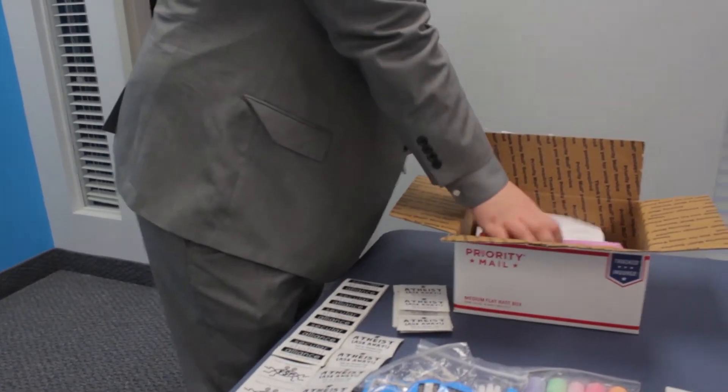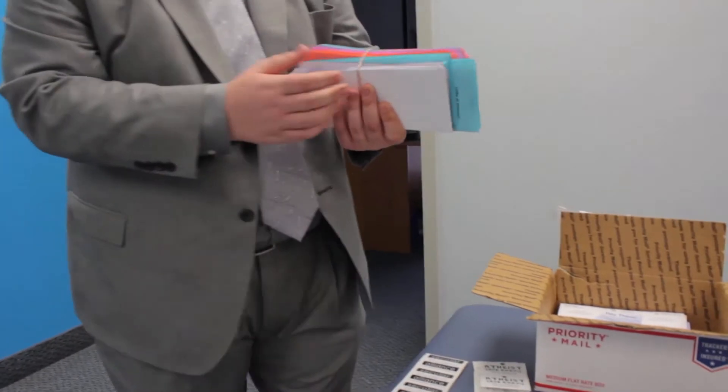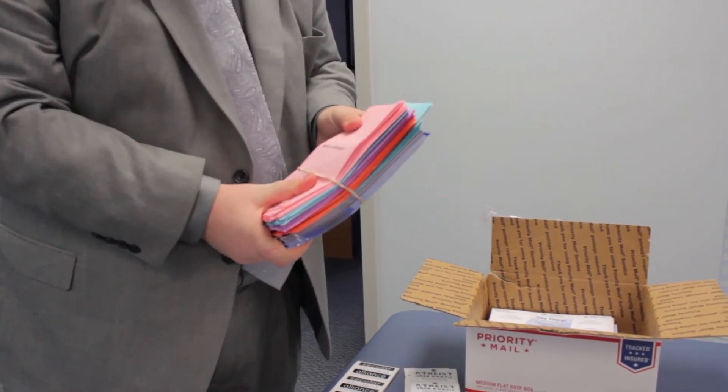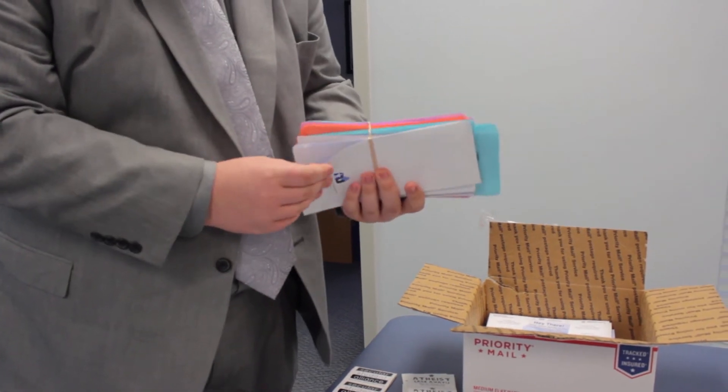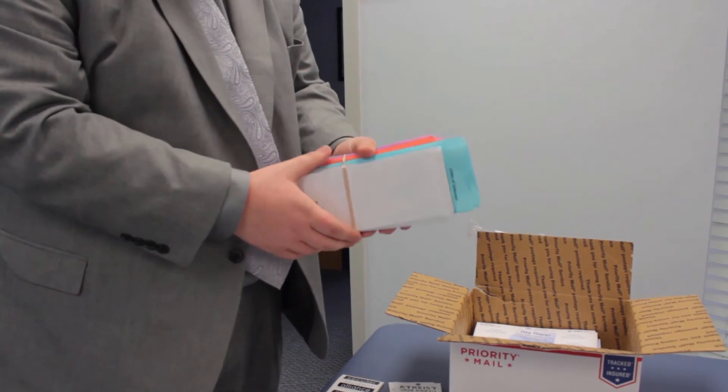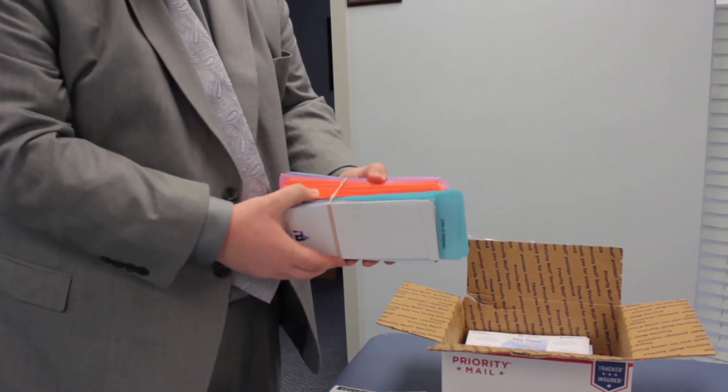Some more of the stickers here. Now, we also send a big rubber-banded sort of combination of a bunch of other flyers and interesting things. The other freethought organizations out there, like American Atheists, American Humanist Association, etc., will send us brochures and interesting materials here.